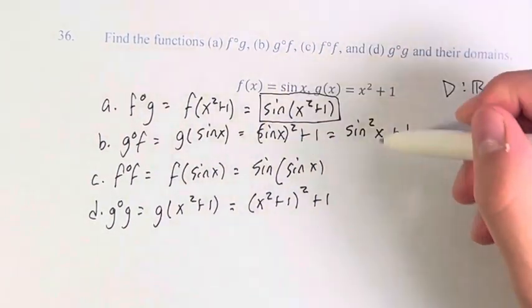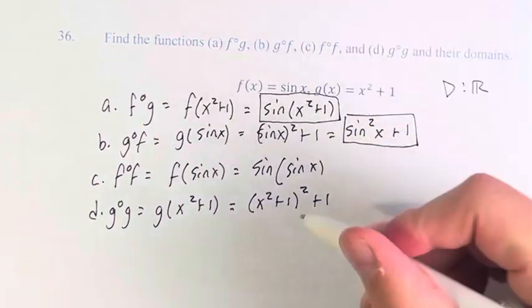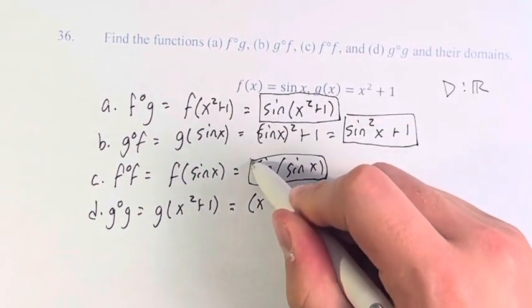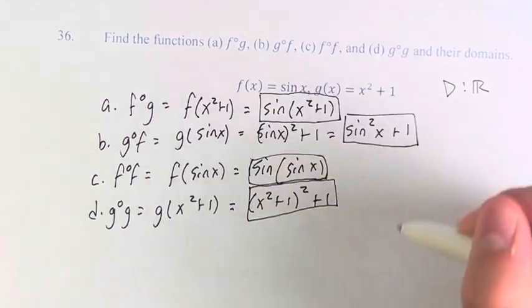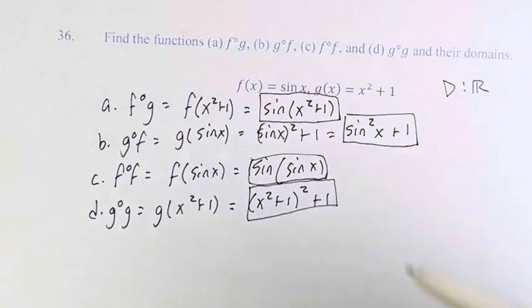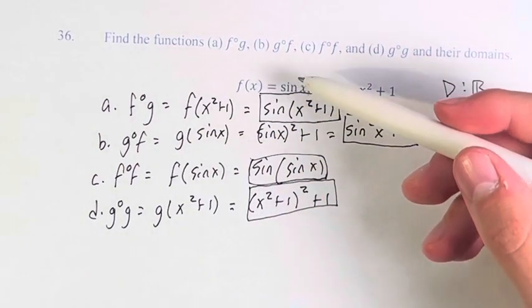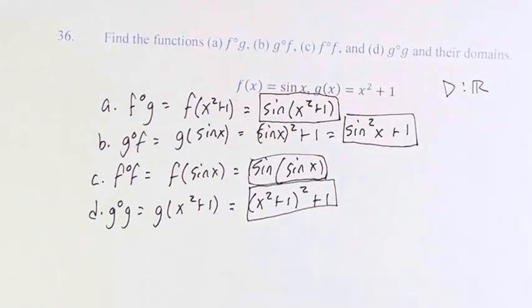So we have f of g, g of f, f of f, and g of g. For these functions, f of x equals sine of x, and g of x equals x squared plus 1. The domain of this is all real numbers.